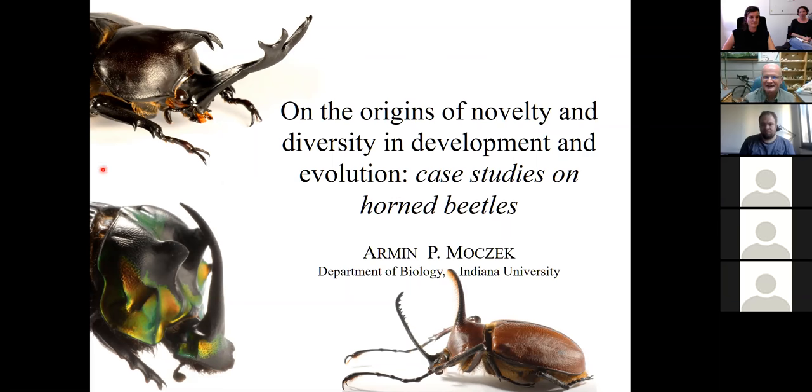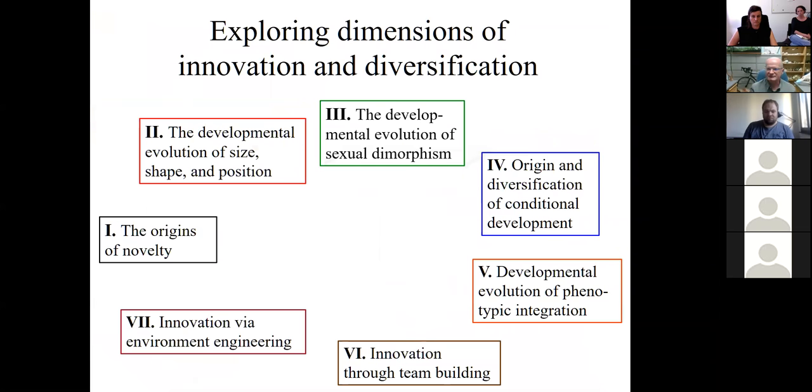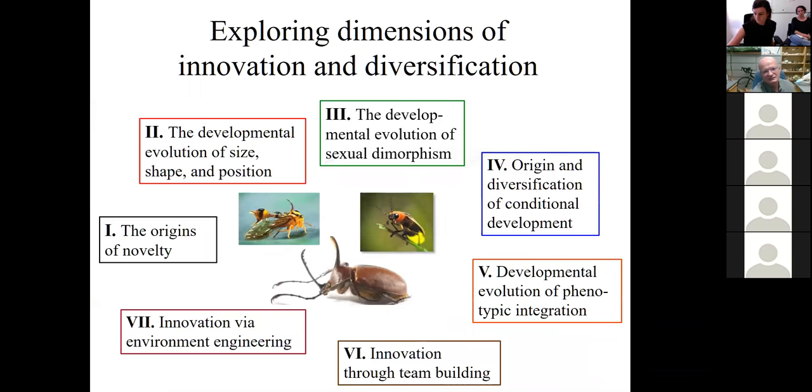So all the work that goes on in my lab, one way or another, is focused on the origin of novel complex traits in development and evolution. That's about as broad a question as you can make it. So to make that digestible and approachable, we break it down along seven dimensions of what we call innovation and diversification.